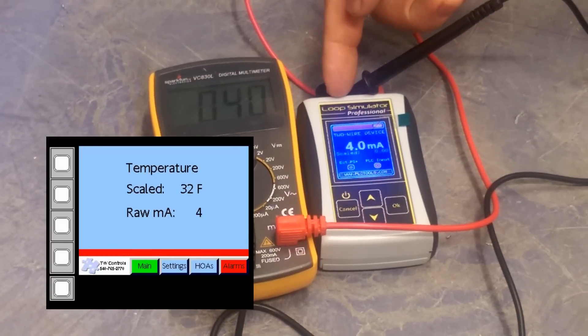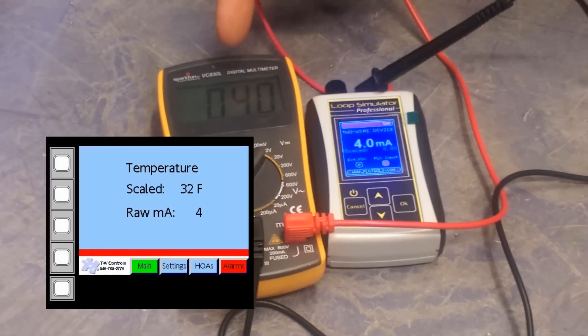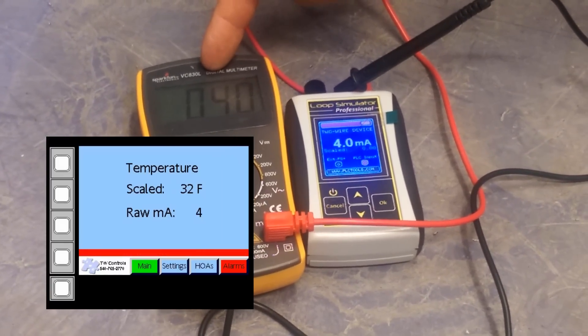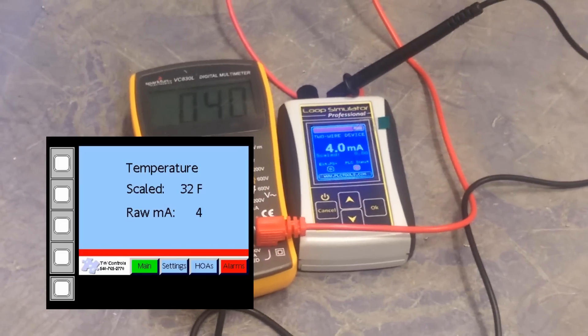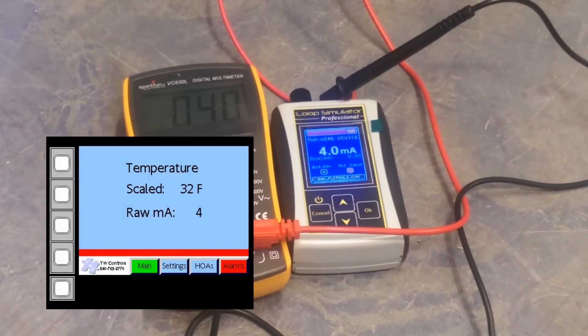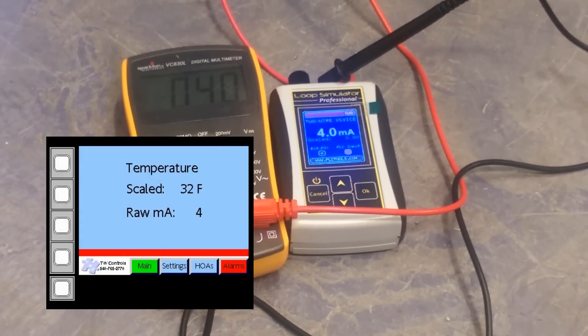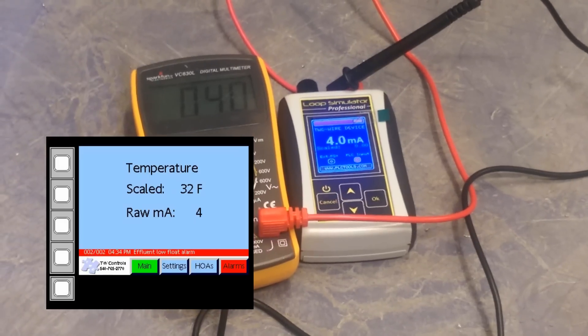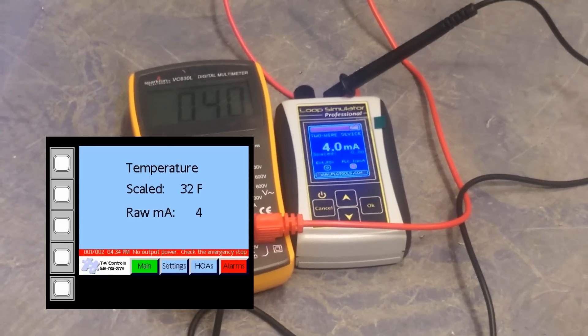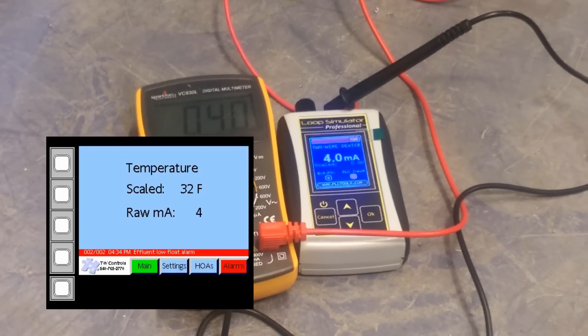As you can see, we have a four milliamp signal coming out of our simulator. Our meter is showing a four milliamp signal. And our HMI is showing a raw milliamp of four. And since we are simulating a temperature probe here, which has a scale of 32 to 140, it is showing 32 degrees.